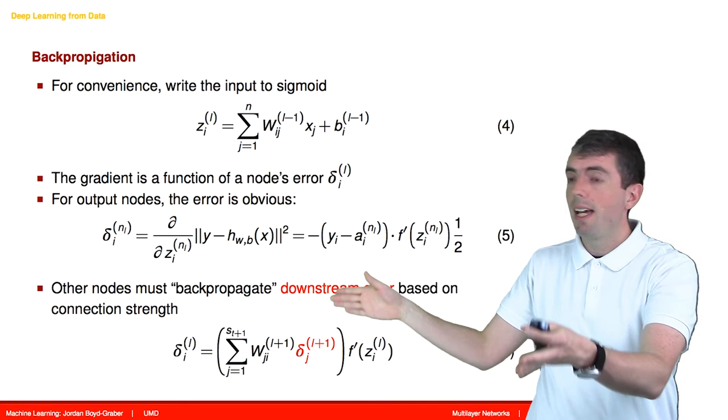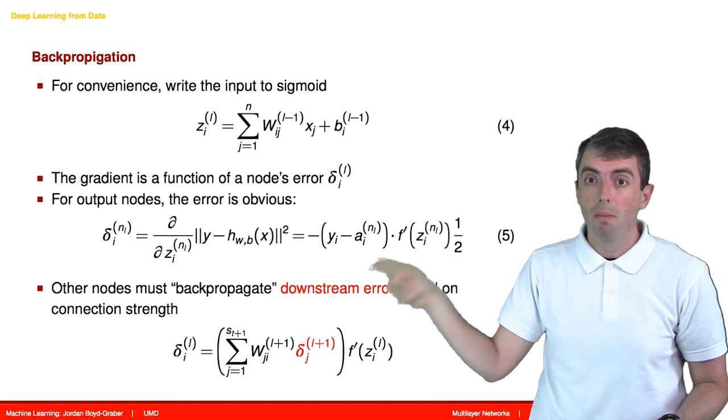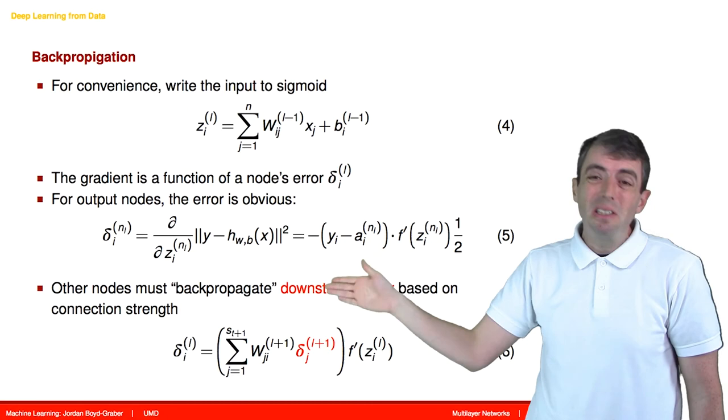And say, hey, node 7, you have the largest vote. I blame you for my mistake. And then node 7 figures out that, oh, I made a mistake.